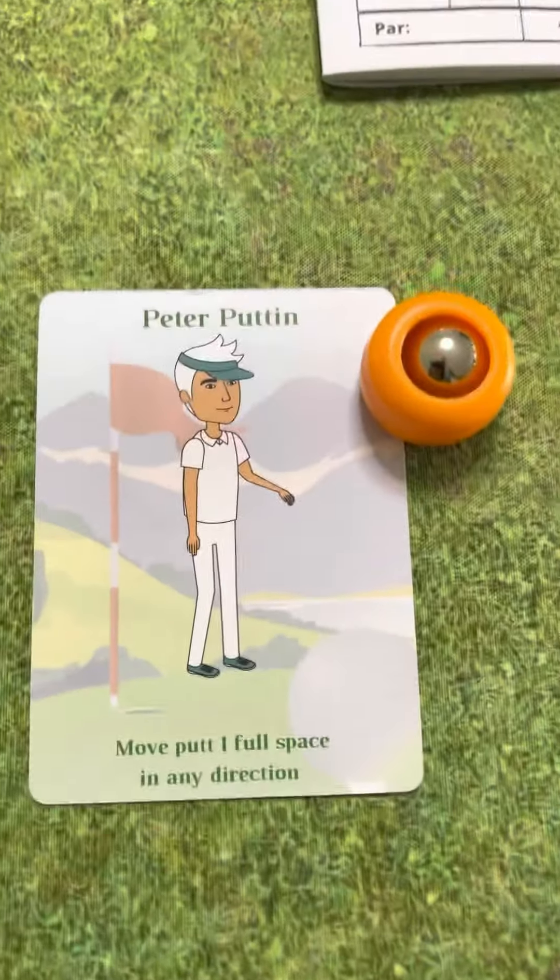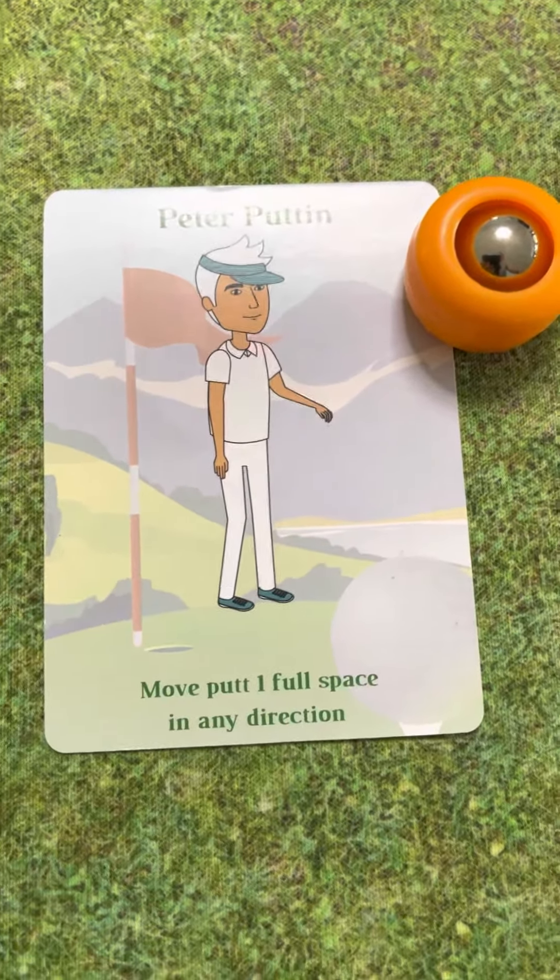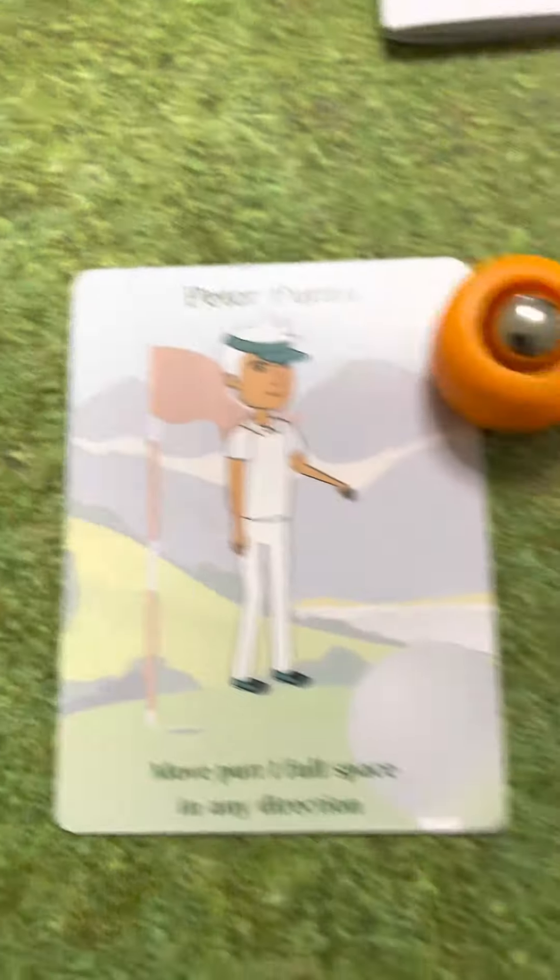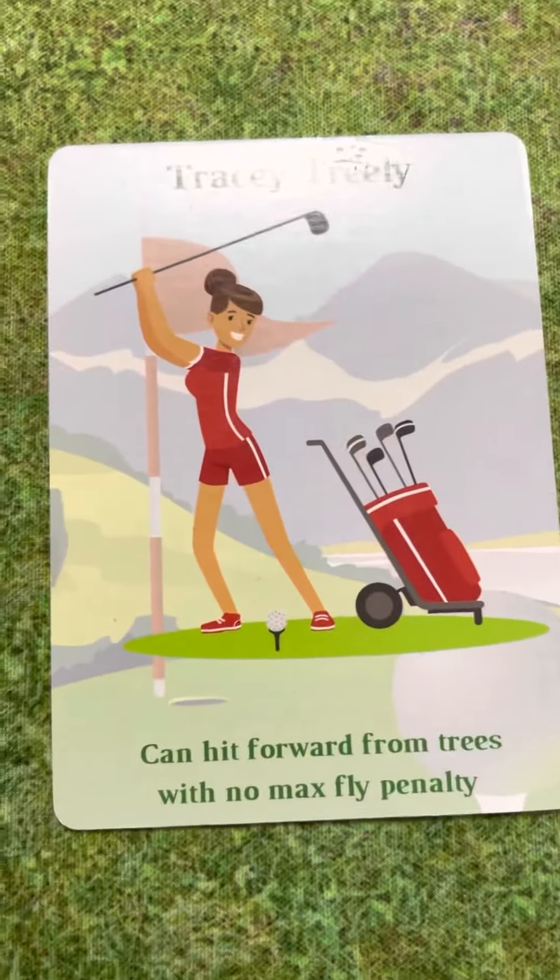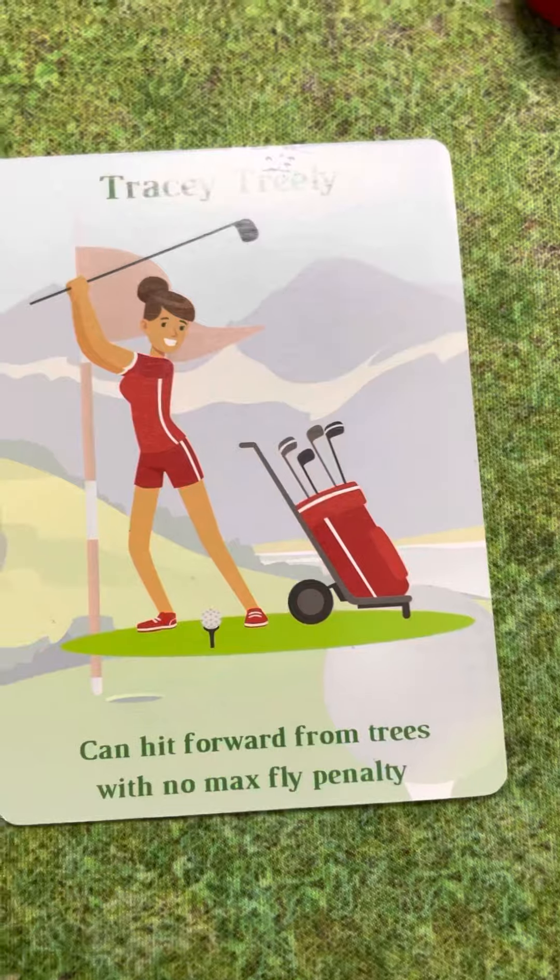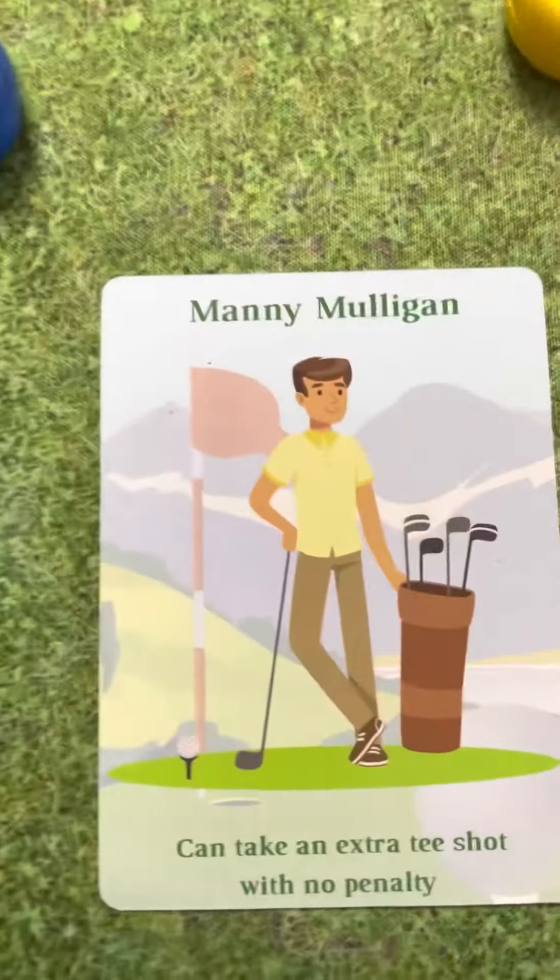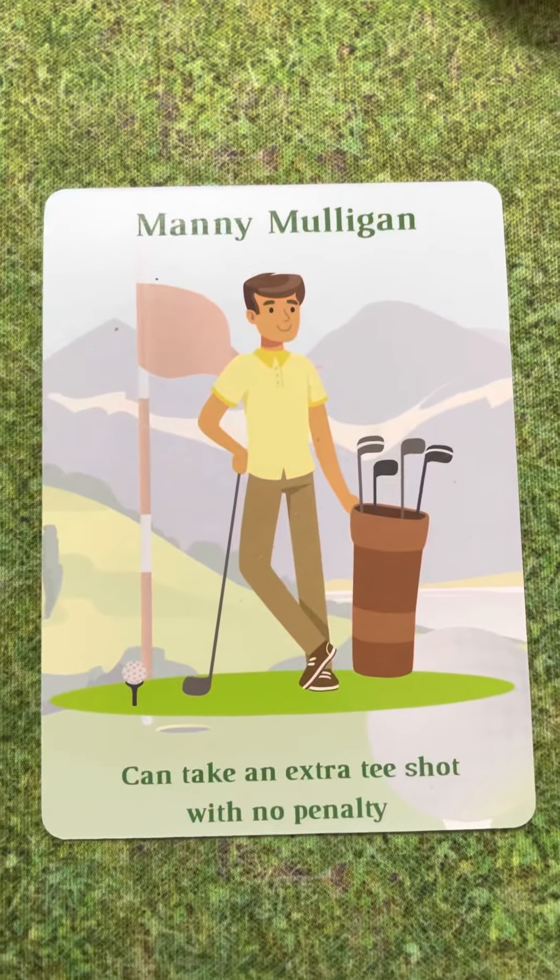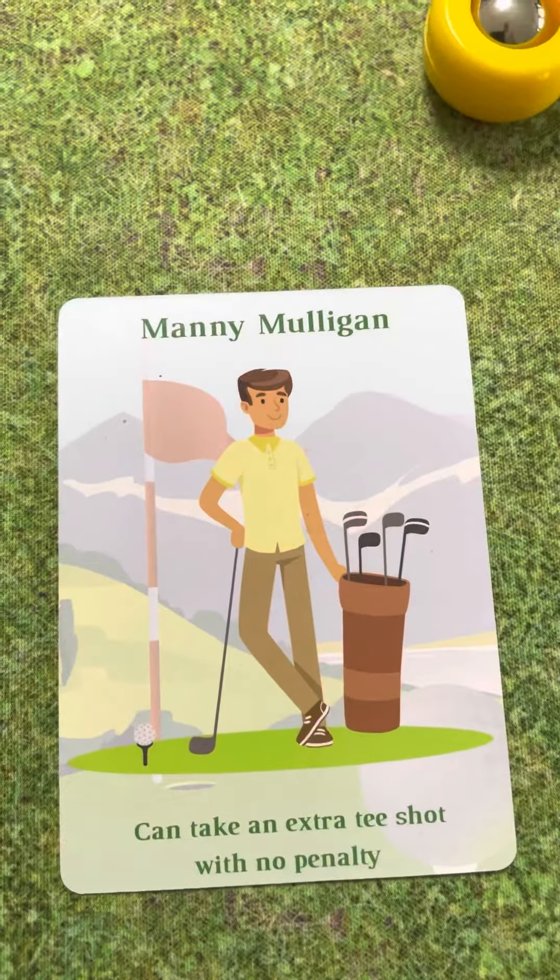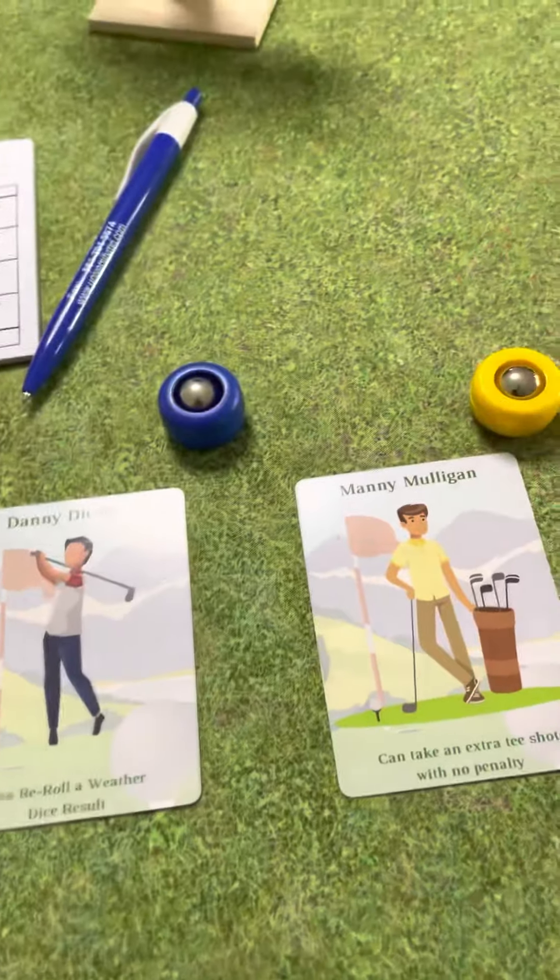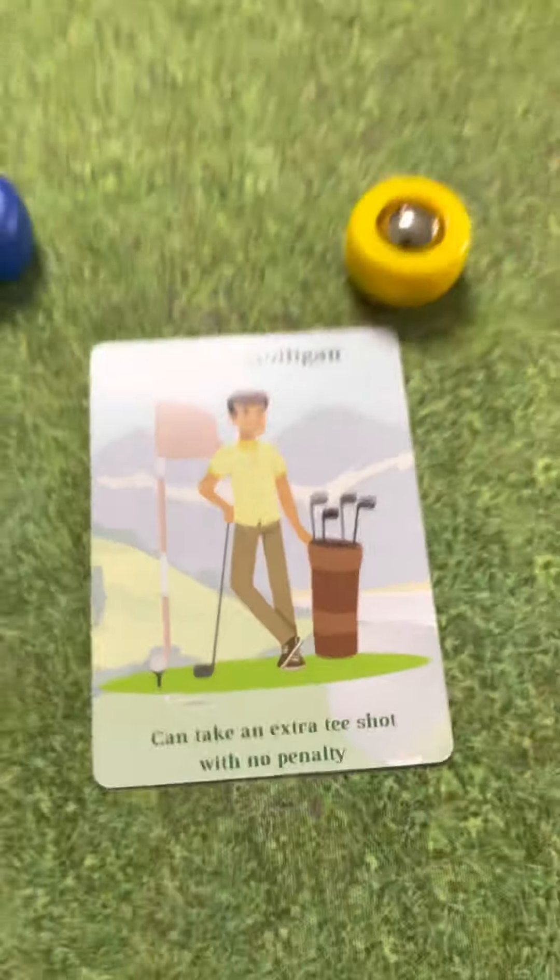I got Peter Putten, who can move his putt one full space in any direction, as long as it's on the green. Tracy Treely can hit forward from trees with no max fly penalty. Danny Diceman can re-roll the weather die. And Manny Mulligan, the man, can take an extra tee shot with no penalty. If anyone's ever played golf, they know Mulligan really well.